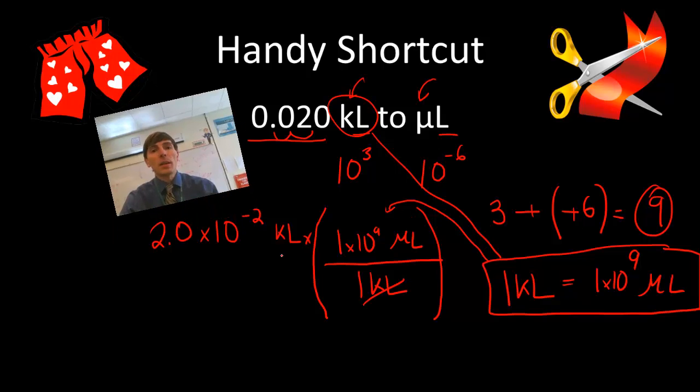And so now my units of kiloliters cancel, and I'm left with taking my powers of 10. Because they're both on the top, I'm just going to add those values together. So minus 2 plus 9, and this is kind of a weird order here, but our final answer is going to be 2.0 times 10 to the 7th microliters.